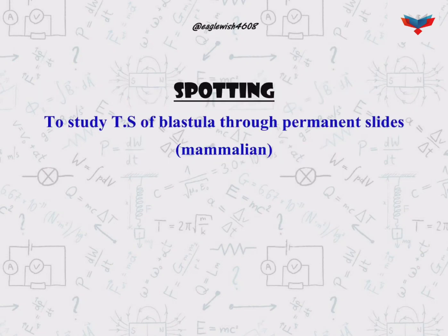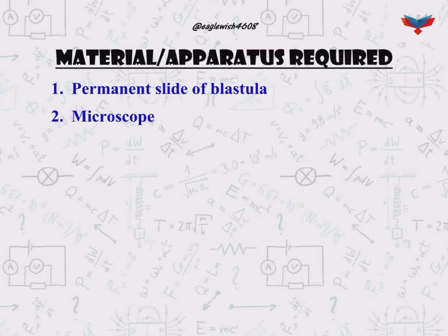The aim of the spotting is to study the transverse section of mammalian blastula through a permanent slide. The materials required in this practical are a permanent slide of blastula and a microscope.